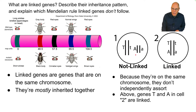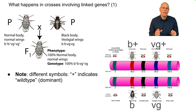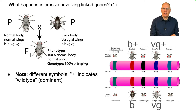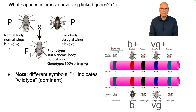So what happens in crosses involving linked genes? Note first that we have a different symbol system. We have B+, B+, VG+, VG+. In this system for non-Mendelian genetics, a plus sign indicates the wild type or dominant allele. If you have a symbol that can be more than one letter without a plus sign, that indicates the recessive.